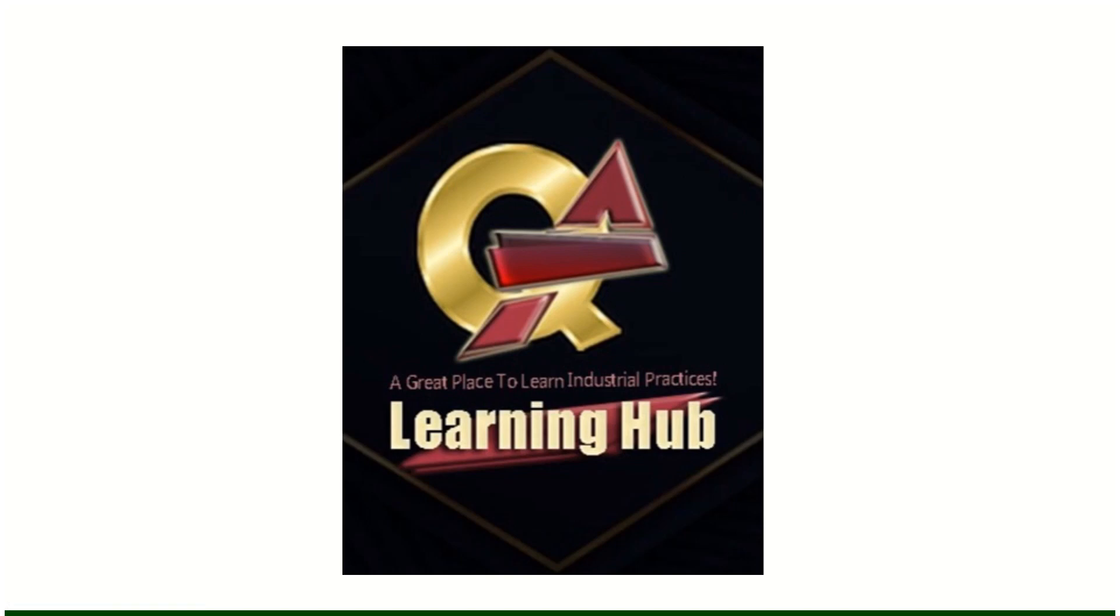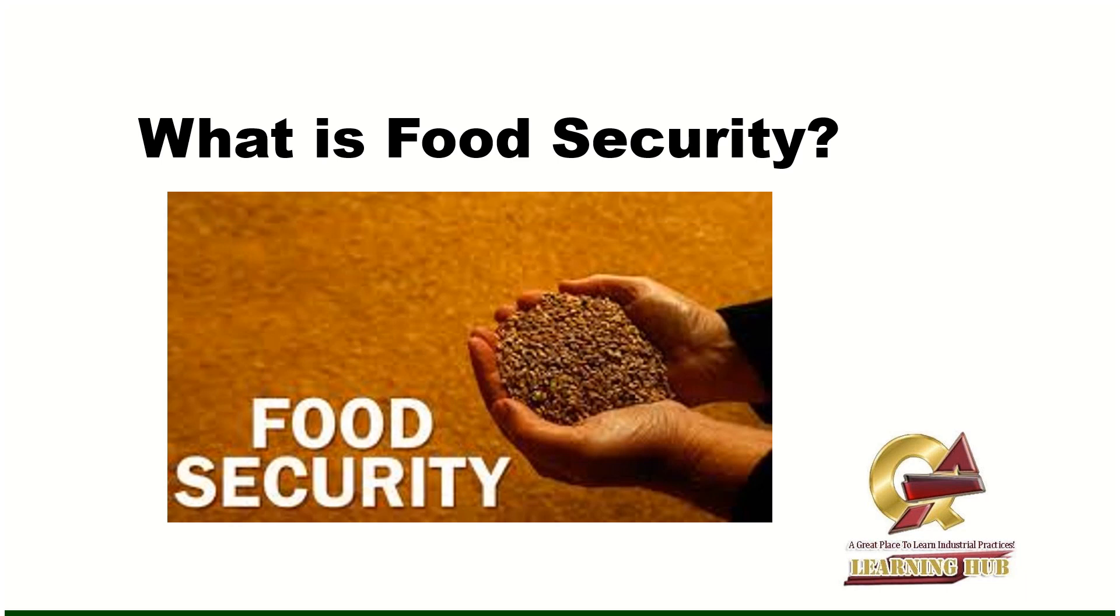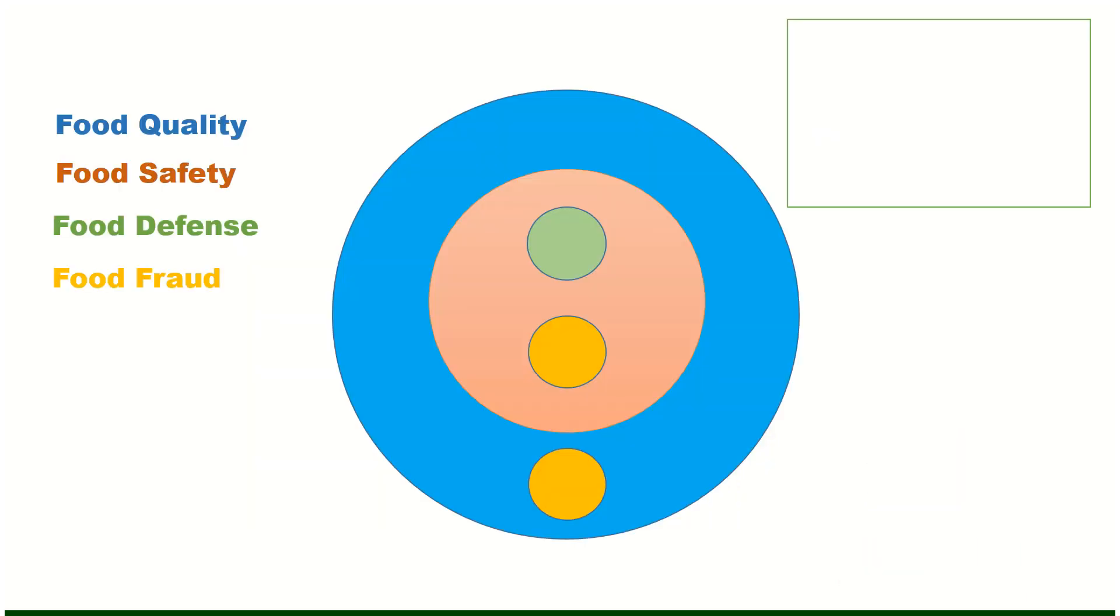Today in this video we will understand what is food security. To understand this we will take the help from diagrams and make the connection of all interrelated terms: food quality, food safety, food defense, food fraud, and food security.